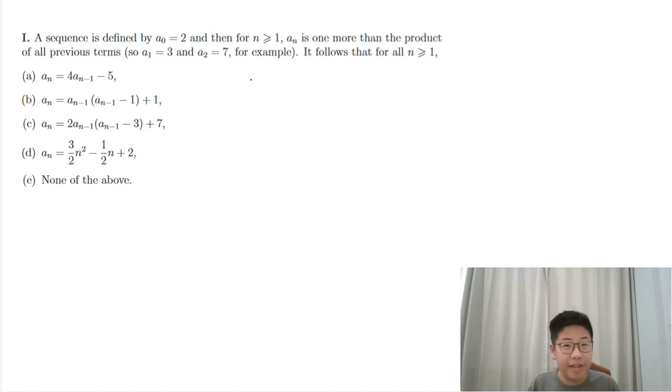So it follows that for all n is greater than or equal to 1. Let's try the conditional method first. So bn is the product an times bn minus 1. an is one more than the product of all previous terms.